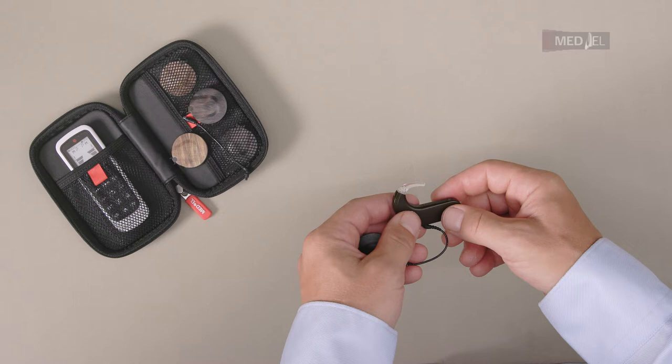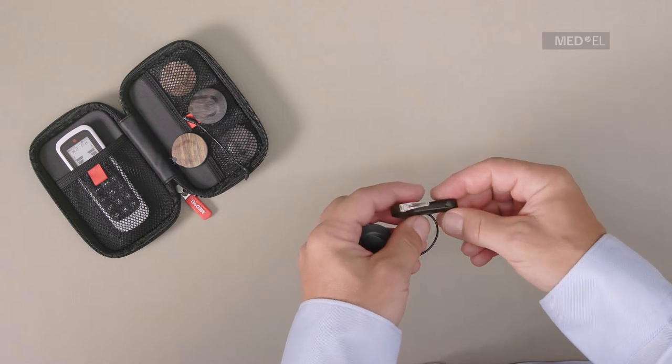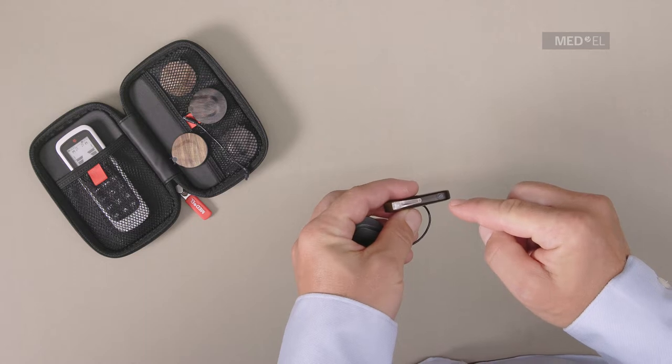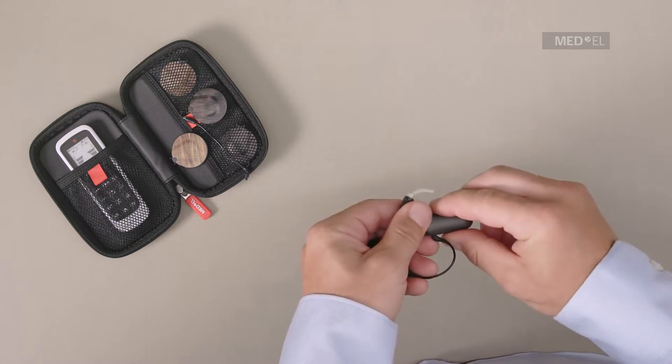To detach the coil cable from the audio processor, first remove the battery pack cover. Make sure that the battery pack cover lock is in the vertical unlocked position.